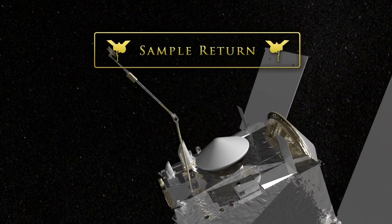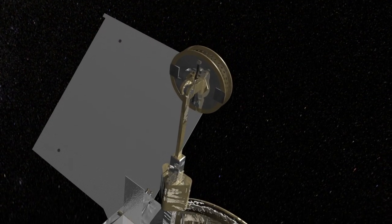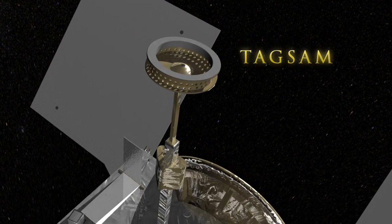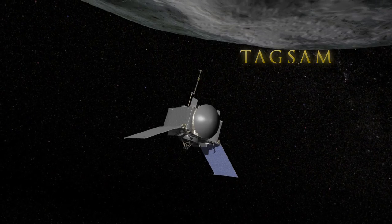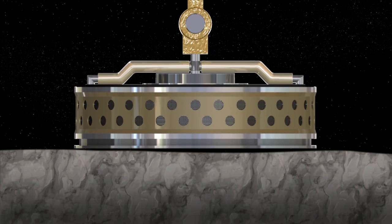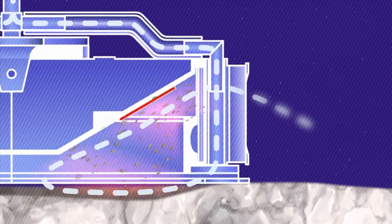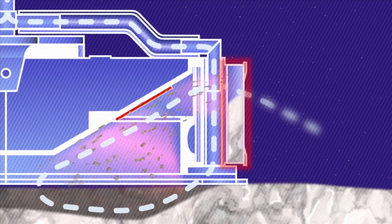Retrieving a sample of the asteroid for study on Earth. In 2019, OSIRIS-REx will deploy its Touch-and-Go Sample Acquisition Mechanism, or TAGSAM, and slowly approach the sample site. When the TAGSAM touches the surface, it will release a burst of nitrogen gas, causing loose rocks and soil to flow into the collector.